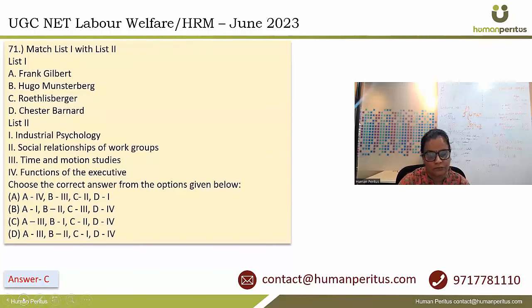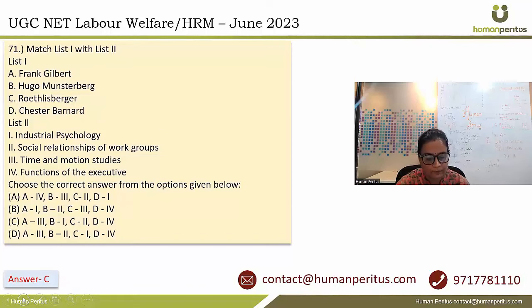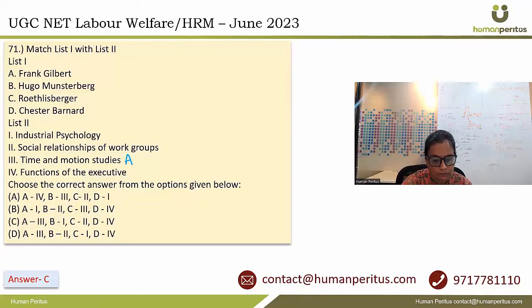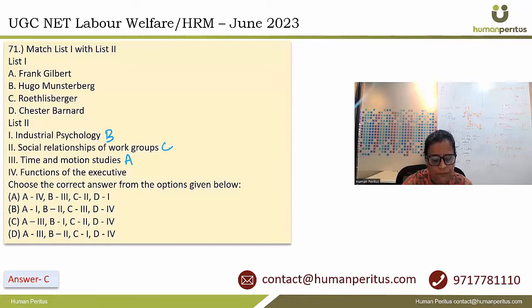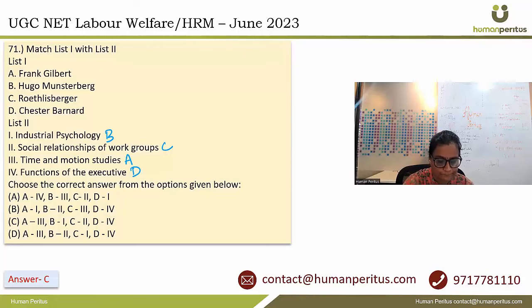Match the list of thinkers with their related concepts. Frank Gilbreth is associated with time and motion study. Hugo Münsterberg is associated with industrial psychology. Roethlisberger is associated with social relationships of work groups. Chester Barnard is associated with functions of the executive. Answer is option C.